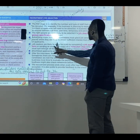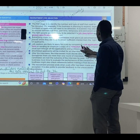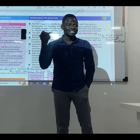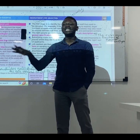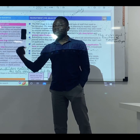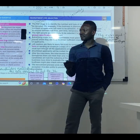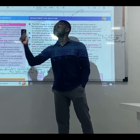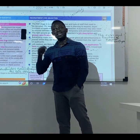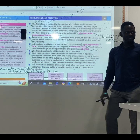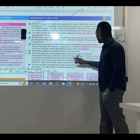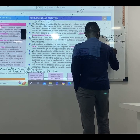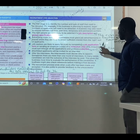Job seekers are likely to apply for a job by completing the job application form through their CV. As soon as we advertise the job, a lot of people will send their application forms. As soon as the application forms are received, what do we do? We select — we shortlist the most suitable or qualified candidates. So the next stage is shortlisting.